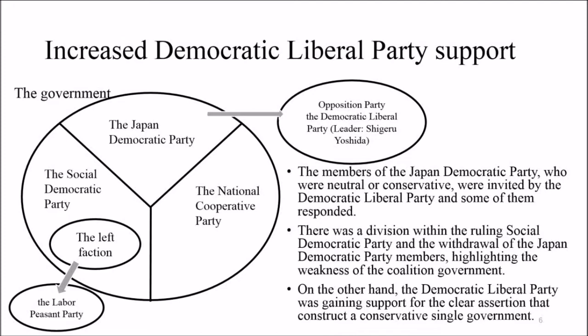Conservative and neutral members of the Japan Democratic Party were invited by the Democratic Liberal Party and some responded. There was a division within the ruling Social Democratic Party and withdrawal of Japan Democratic Party members, highlighting the weakness of the coalition government. On the other hand, the Democratic Liberal Party was gaining support for its clear assertion to construct a conservative single-party government.